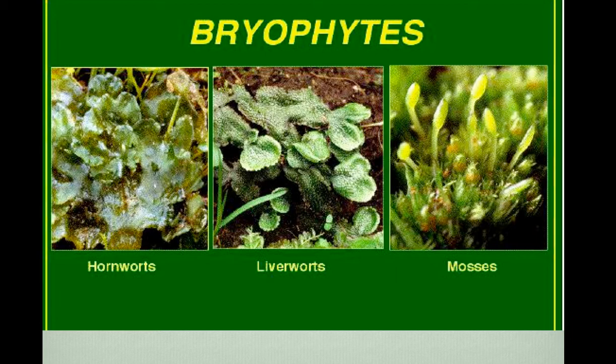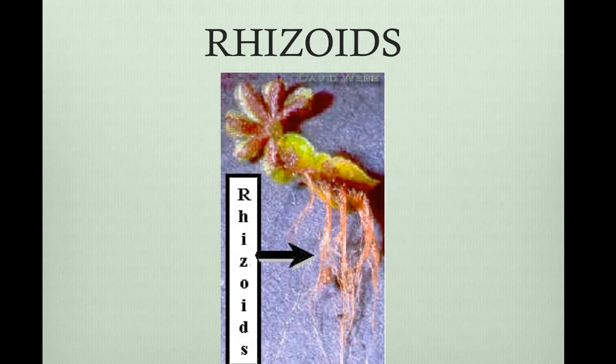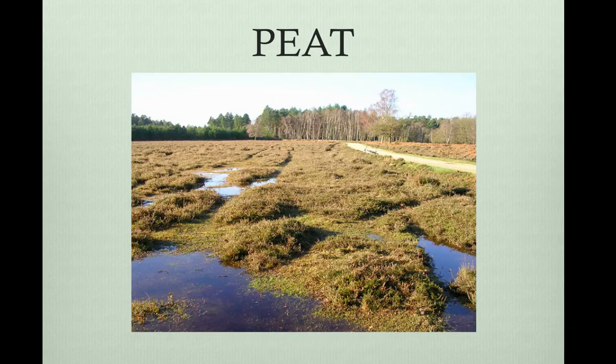Bryophytes have rhizoids. They're used to anchor to the ground. They are long tubular single cells or filaments, and they don't absorb like roots do. Peat is undecayed organic matter formed from sphagnum moss, which is peat moss. It grows in wetlands called peat bogs or peatland. It does not decay readily. The world's peatlands store 400 billion tons of organic carbon, and this plays an important role in stabilizing CO2 concentrations in the atmosphere. Sphagnum moss used to be used by aboriginal people for diapers and also was used during wartime as an antiseptic packing material for wounds because it's very absorbent and it doesn't decay.